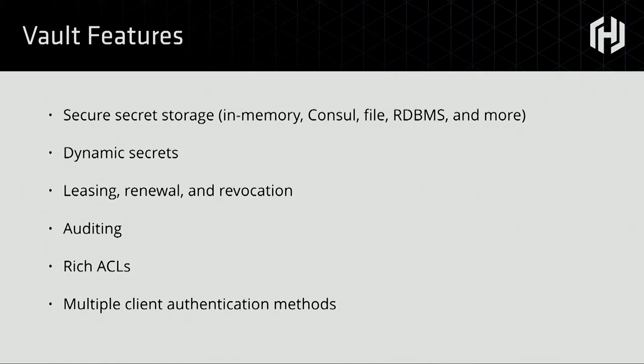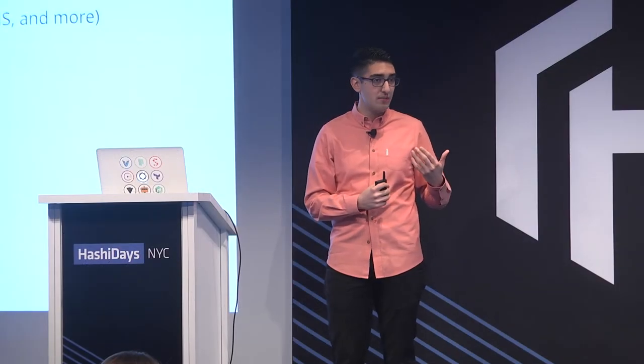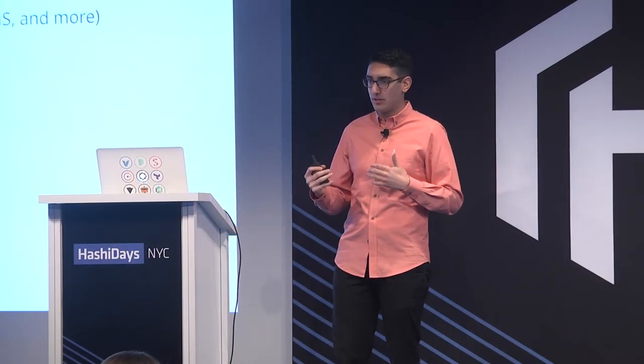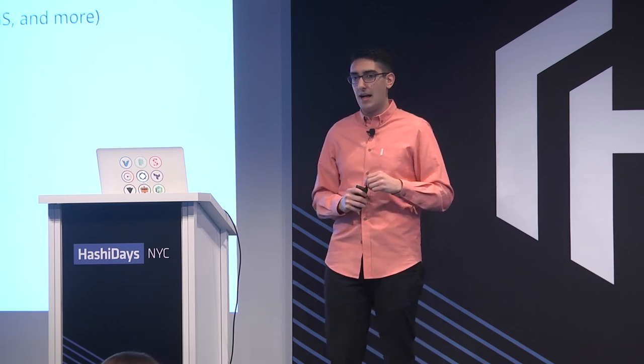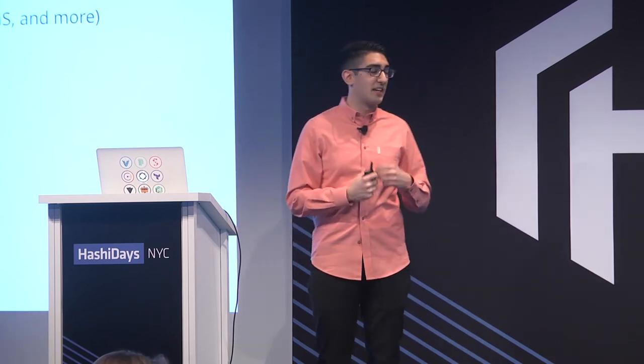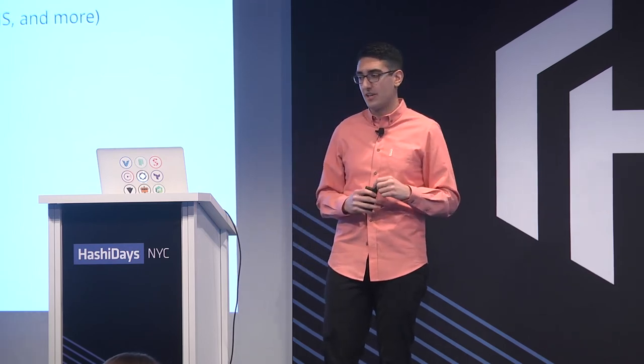We'll talk about that in terms of how you get to one-time credentials and unique identification. Part of this, you end up with more complex mechanisms around leasing and renewal. And there's security bread and butter — things like auditing, rich access control systems, multiple authentication mechanisms. What I want to ground this in is a number of security principles. This is what we don't often talk about — why does Vault do these things? Why does it force us to think about things like leases? It's really to drive a number of these very core security principles.